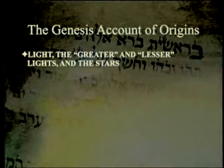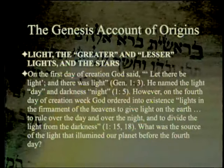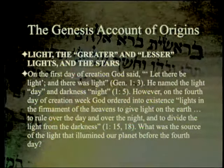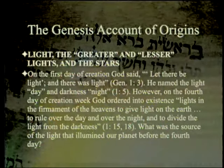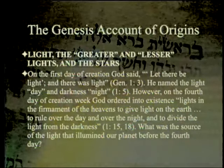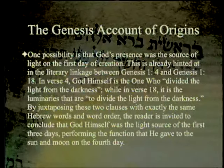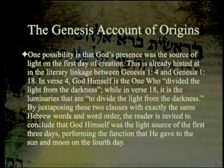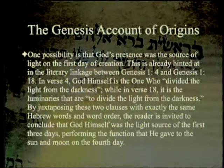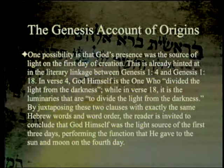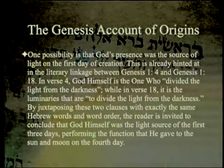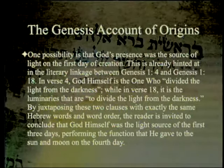The next topic: the greater light, lesser light, and stars. On day 1 God said 'let there be light,' but on day 4 lights were ordered into the firmament. What was the light source before day four? One possibility is that God's own presence was the light source for the first day — hinted at in the literary linkage between Genesis 1:4 and 1:18, where God divided the light from darkness in verse 4, and the luminaries do the same in verse 18, suggesting God performed the luminaries' function for the first three days.